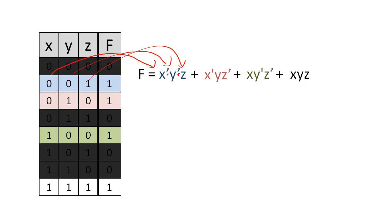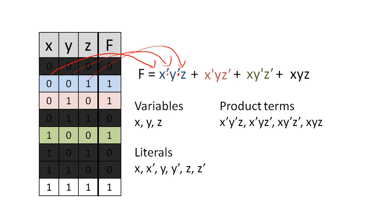As a quick aside, a literal is a variable that is either complemented or not complemented in a product term. So this expression has three variables, four product terms, and six literals. If a product term contains all three variables like these, it is called a minterm.